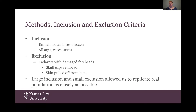For inclusion, we included all embalmed and fresh frozen cadavers and also included all ages, races, and sexes. For exclusion, we mainly excluded cadavers that had forehead damage. One example is when the skull cap was removed, if it was cut too low close to the eyebrows and disrupted the pedicle, we couldn't use that. Also, sometimes when removing skull caps, tissue was pulled from the bone on the forehead, which also disrupted the pedicle. A large inclusion and small exclusion criteria allowed us to replicate real populations as closely as possible.